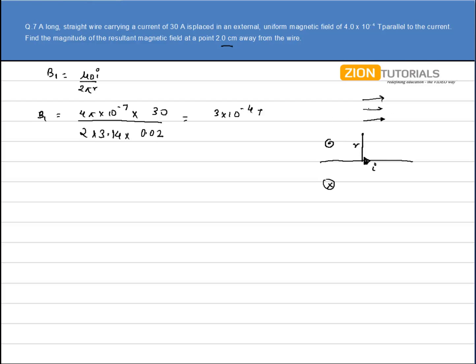There is another magnetic field in this direction that is 4×10^-4 tesla in this direction. Clearly we have 2 magnetic fields whose angle is 90 degree between each other.